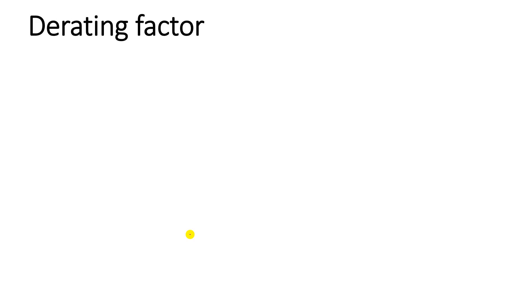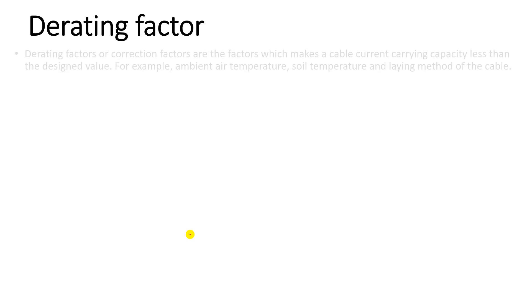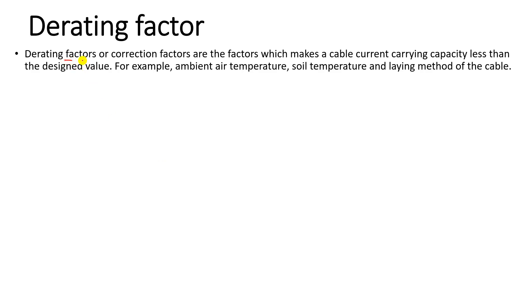In this lesson we discuss the derating factor in cables, specifically due to cable formation in the trefoil and flat formation. Rating factors, or correction factors, are the factors which reduce a cable's current carrying capacity below its designed value. Several conditions such as ambient air temperature, soil temperature if buried underground, and the laying method or cable formation can all lead to derating.